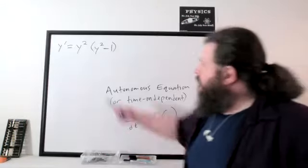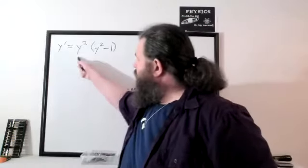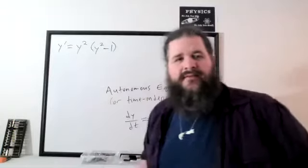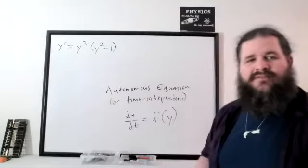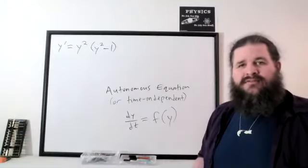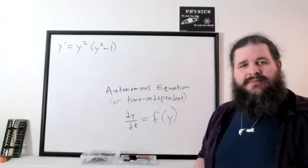For instance, this is an autonomous equation because the derivative equals something about just y itself. It doesn't involve any direct influence from the independent variable.